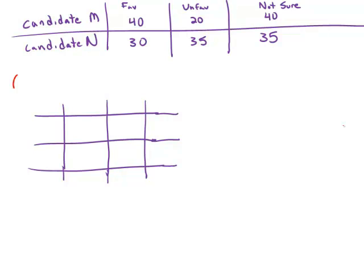So statement number one tells us that the voters who did not respond favorable to either was 40. So I'm going to create this double matrix just to consider the question favorable for M, yes or no. And we're going to lump together both the unfavorables and the not sures as no. And favorable for N, and again, yes, no.